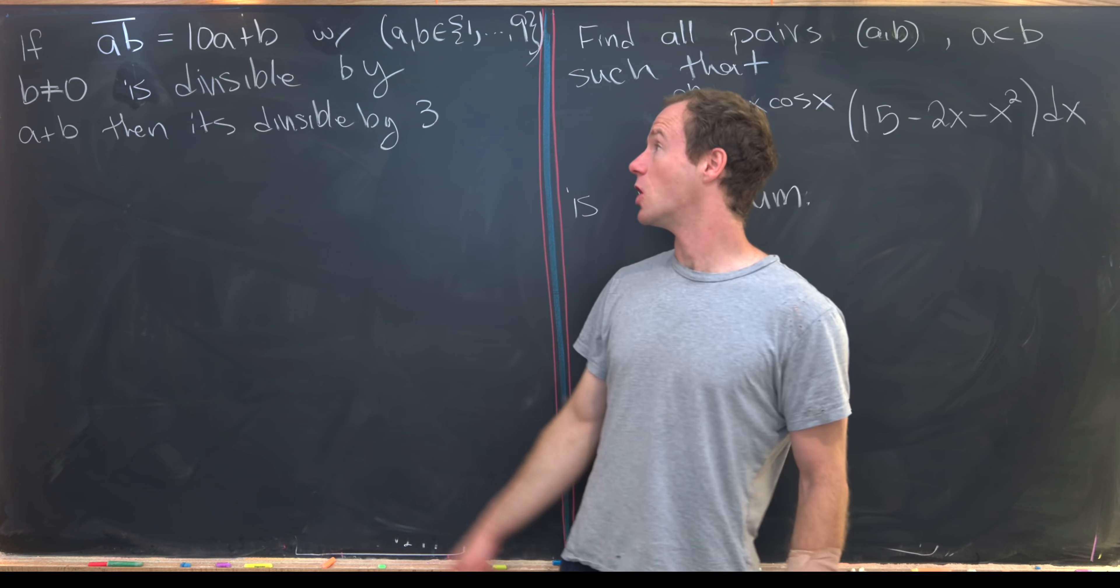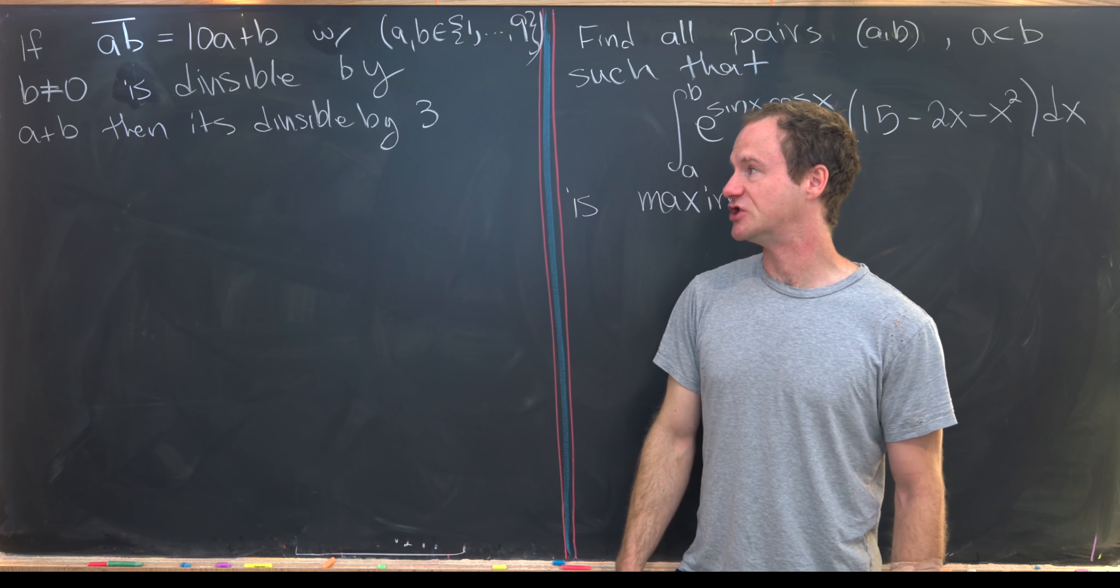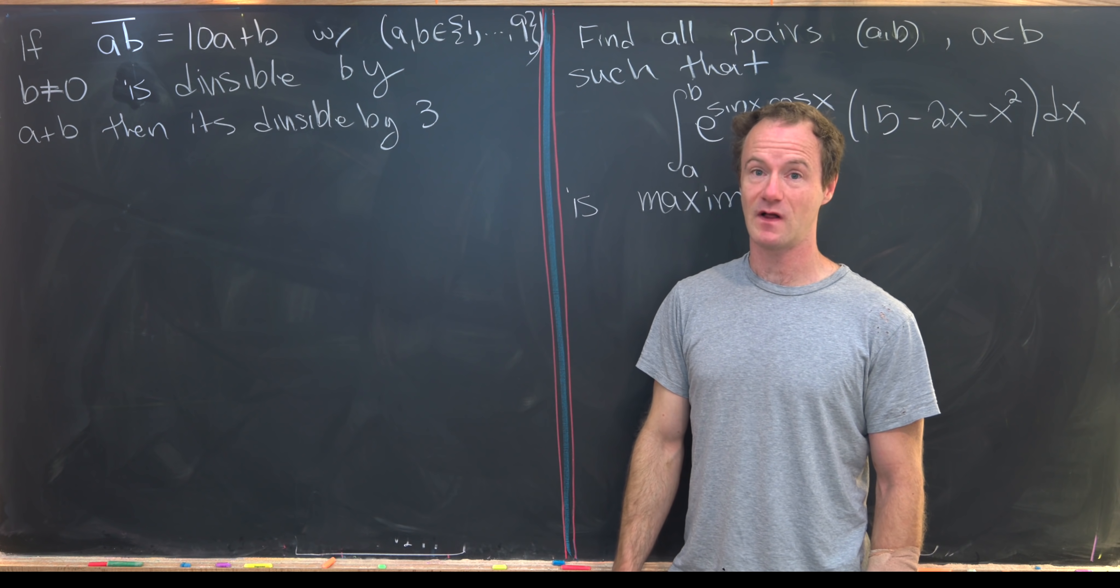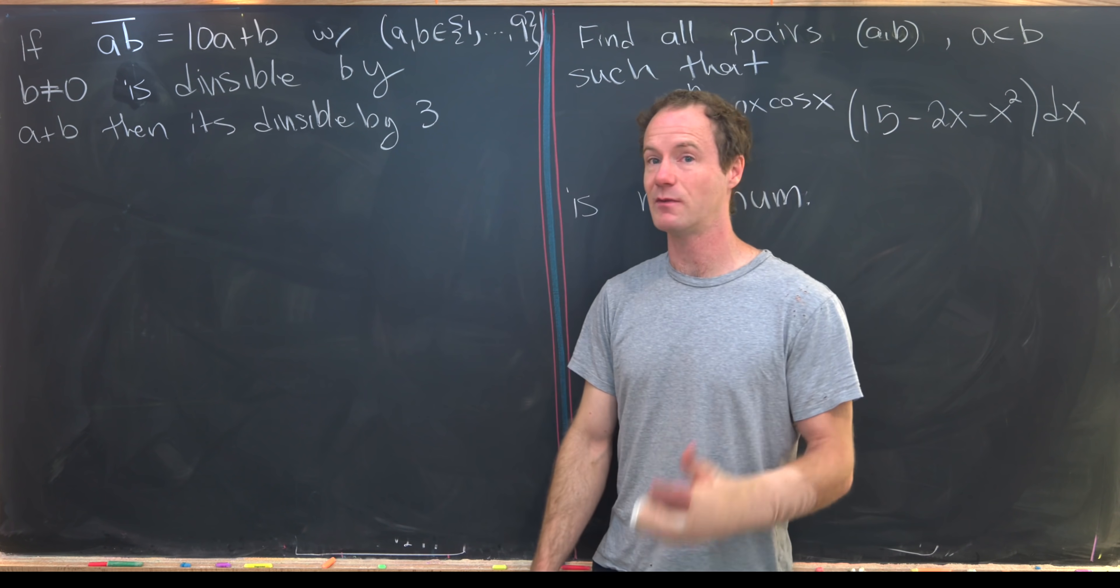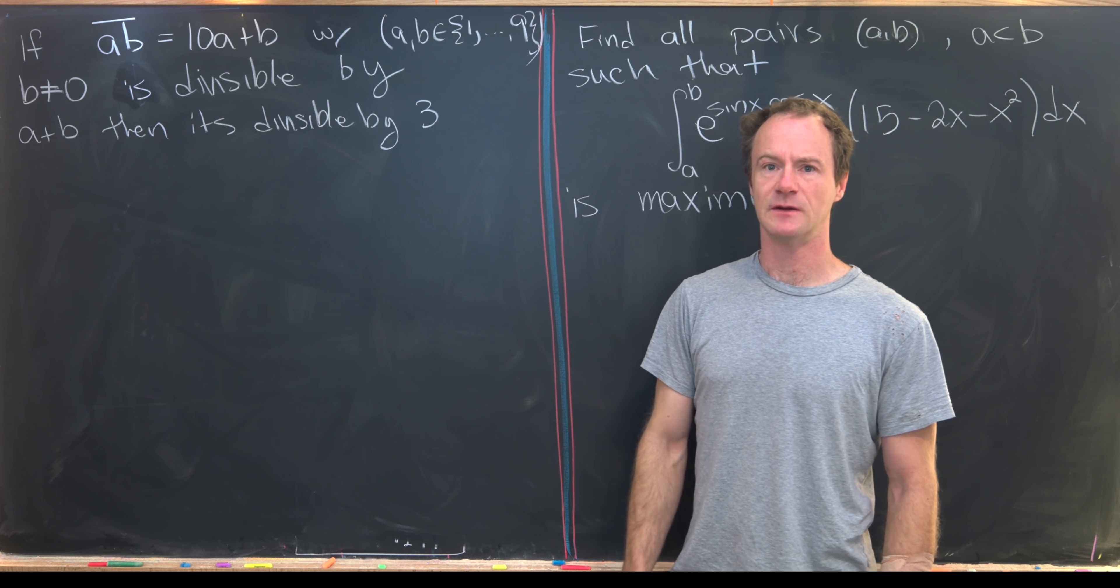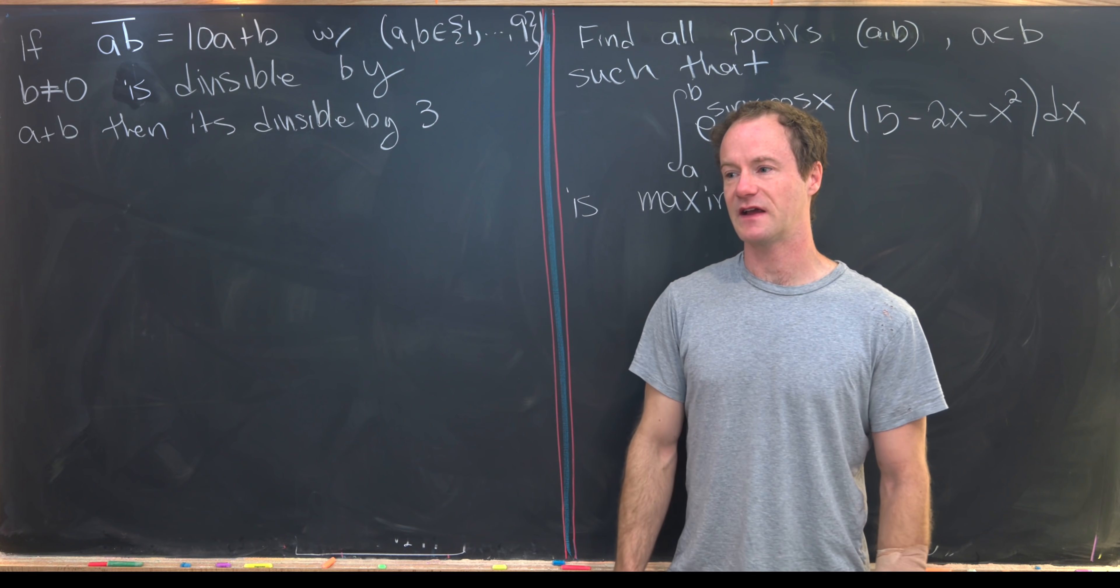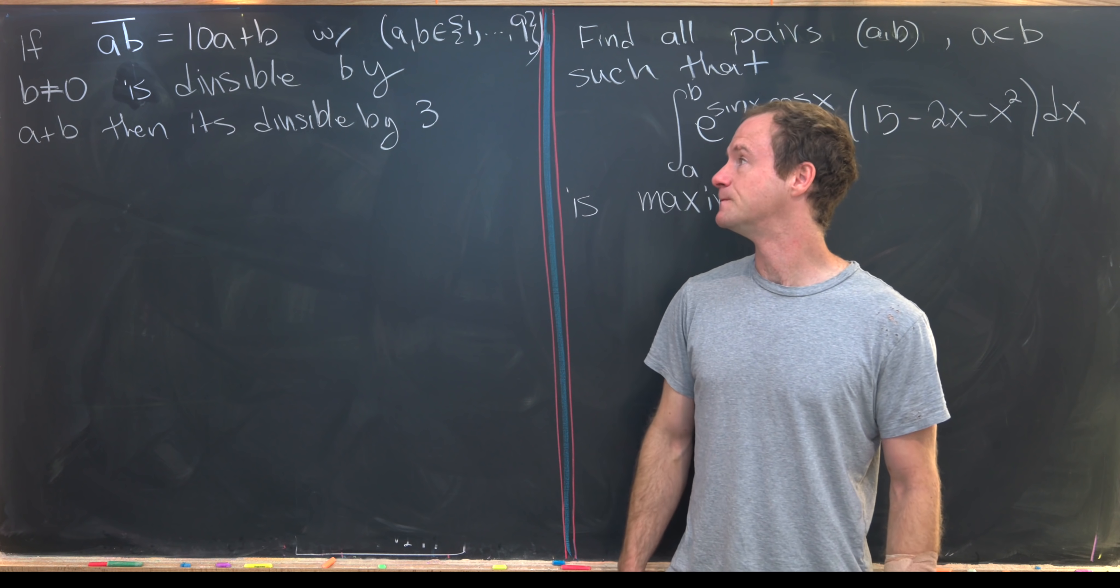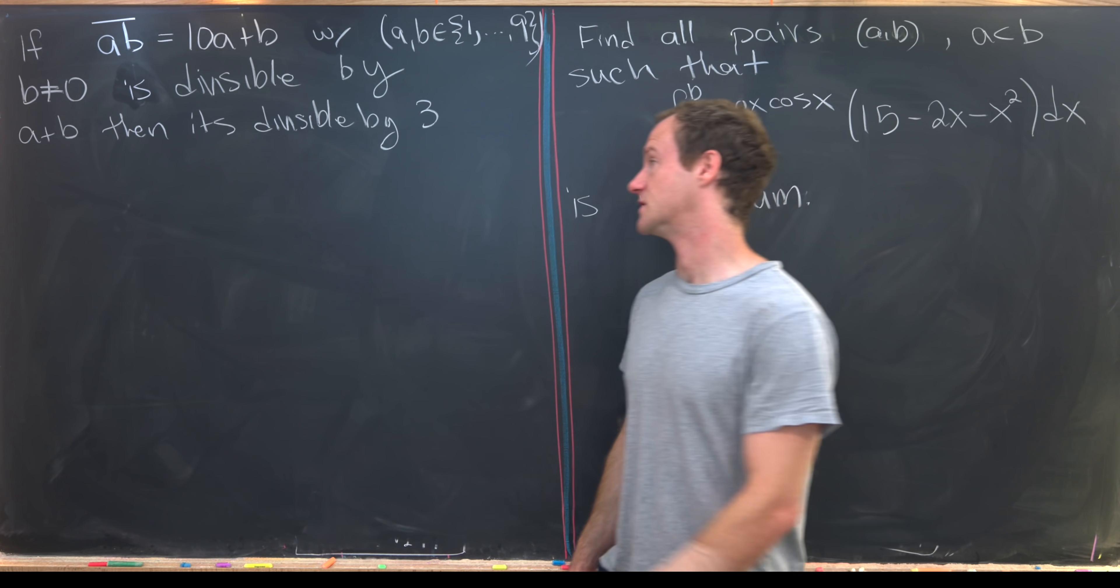And then we'll show that if this two-digit number is divisible by a plus b, in other words, the sum of the digits, then it's in fact divisible by three. So this looks a little bit like the divisibility test for three, but not quite. Okay, so let's see how we can do this.